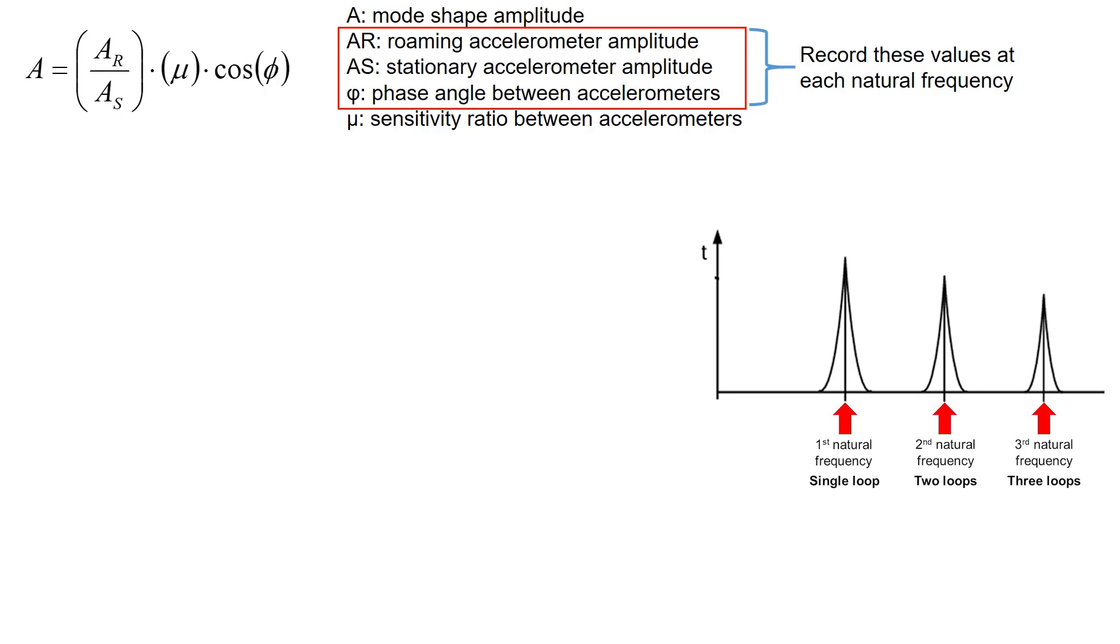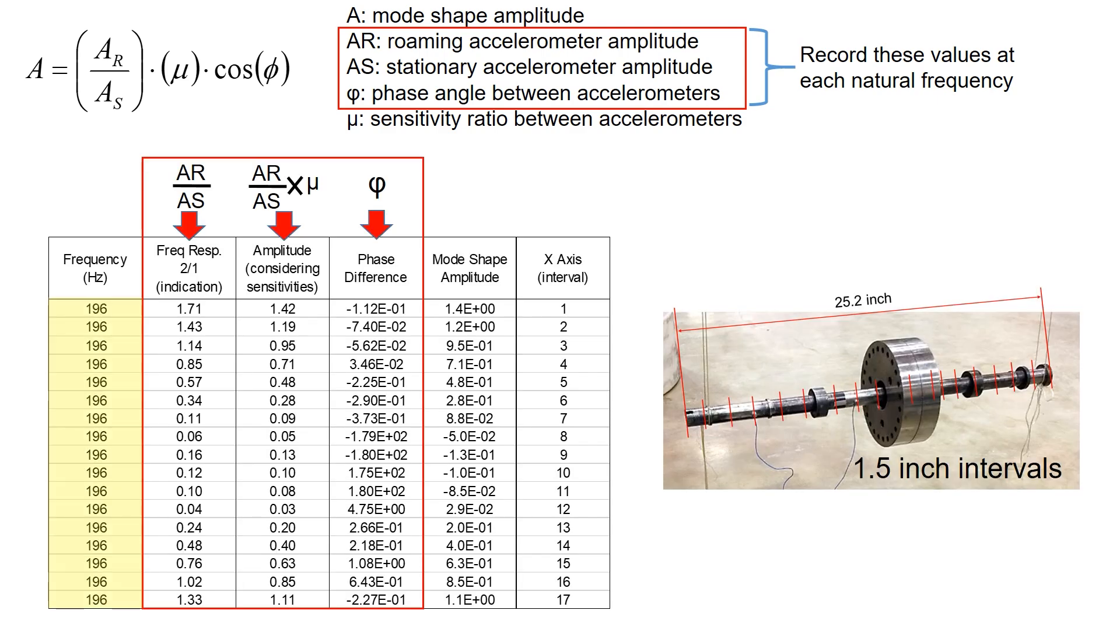If you have recorded the data at each natural frequency, the data would look like this. This data set is for the first natural frequency of 196 Hz, with data recorded at each interval.